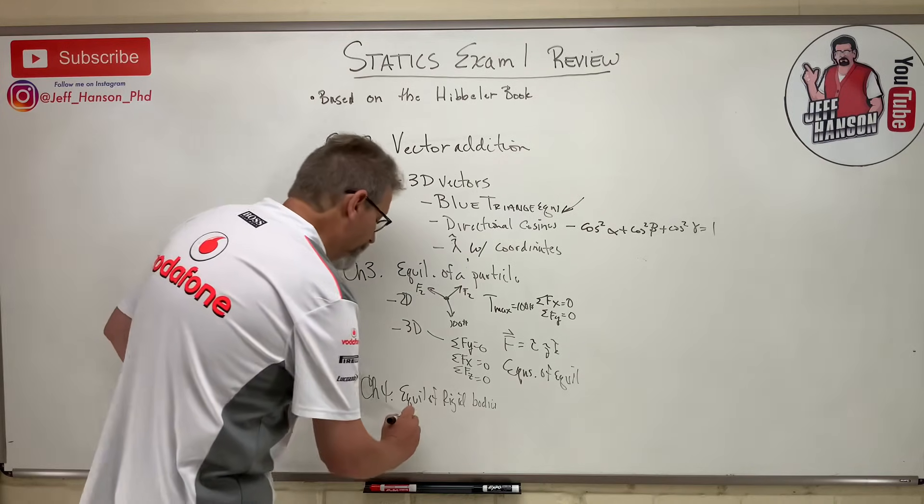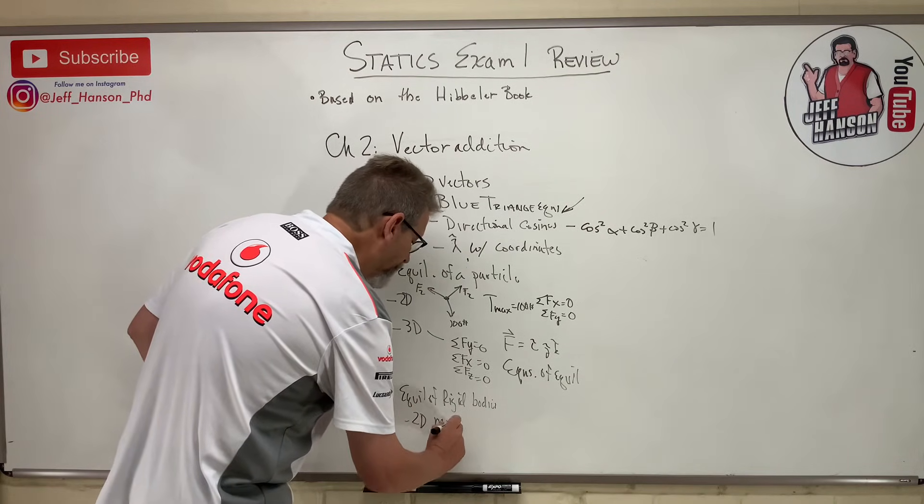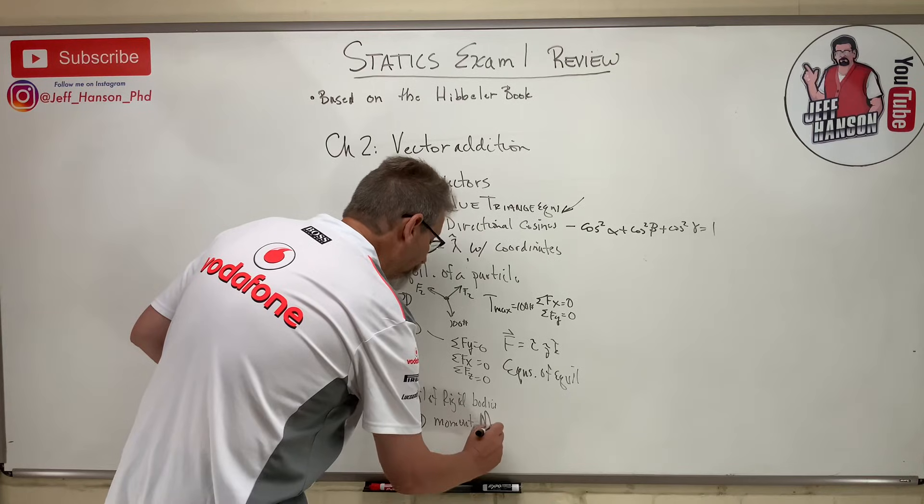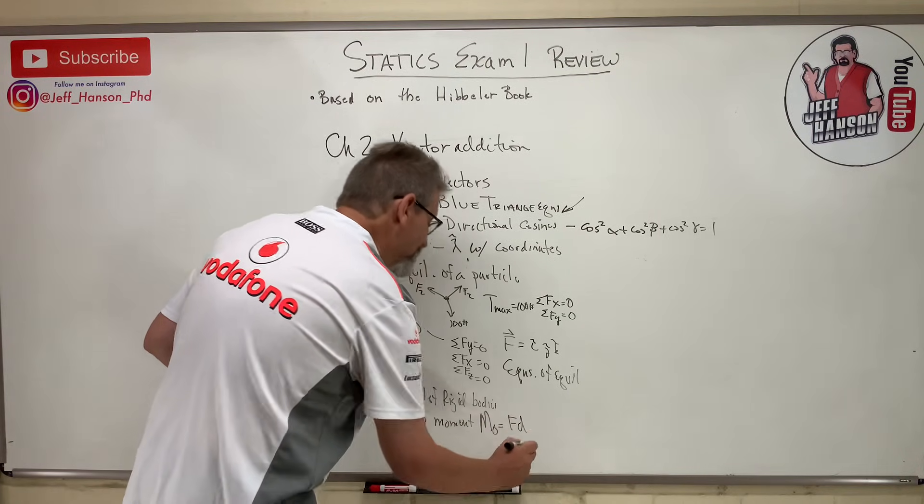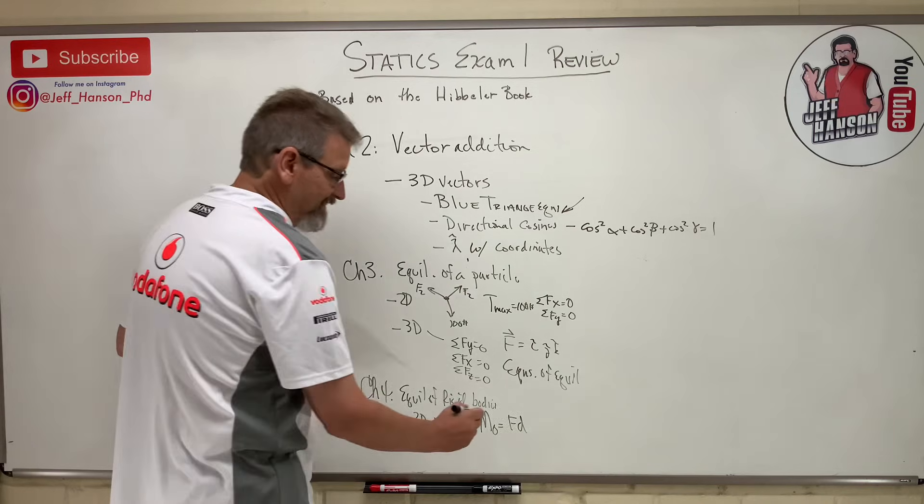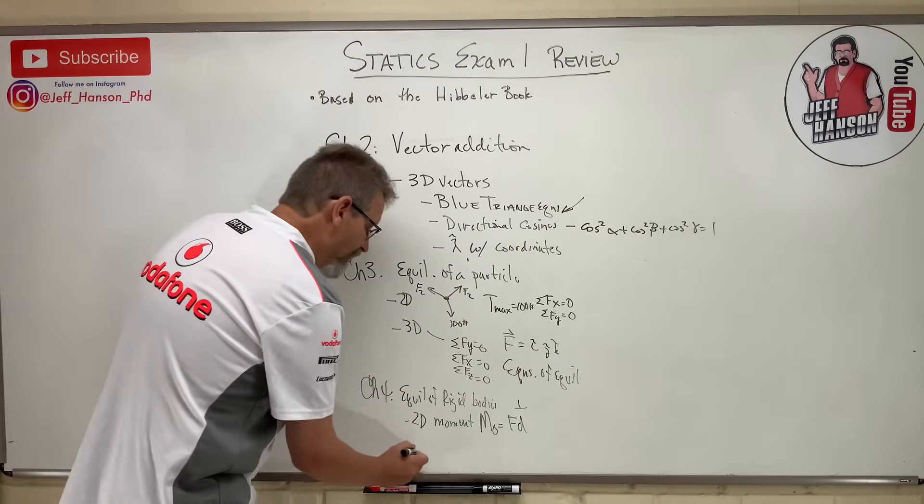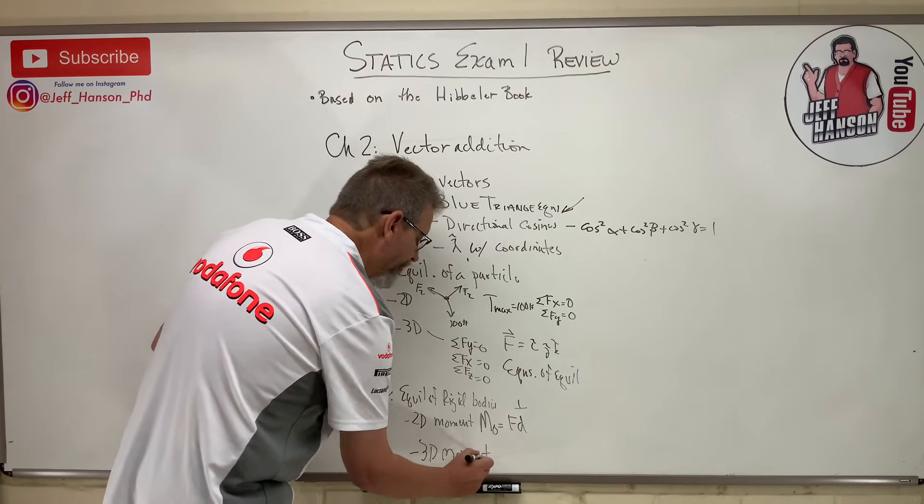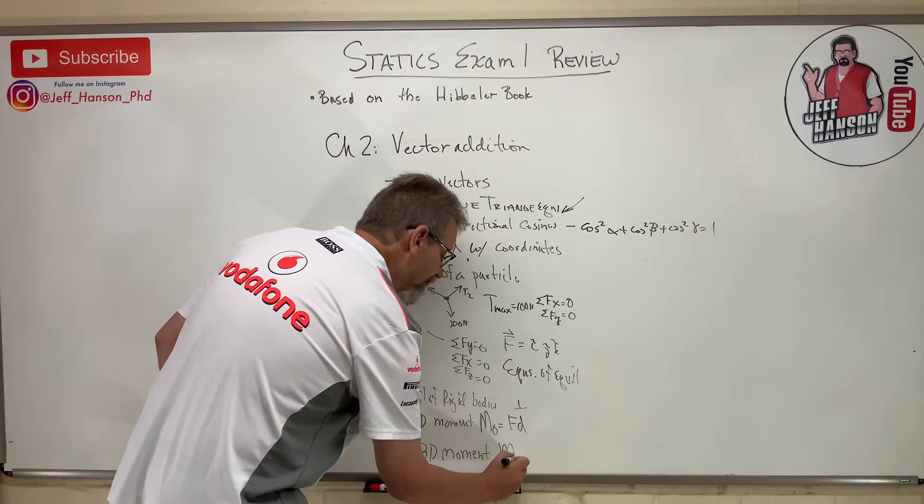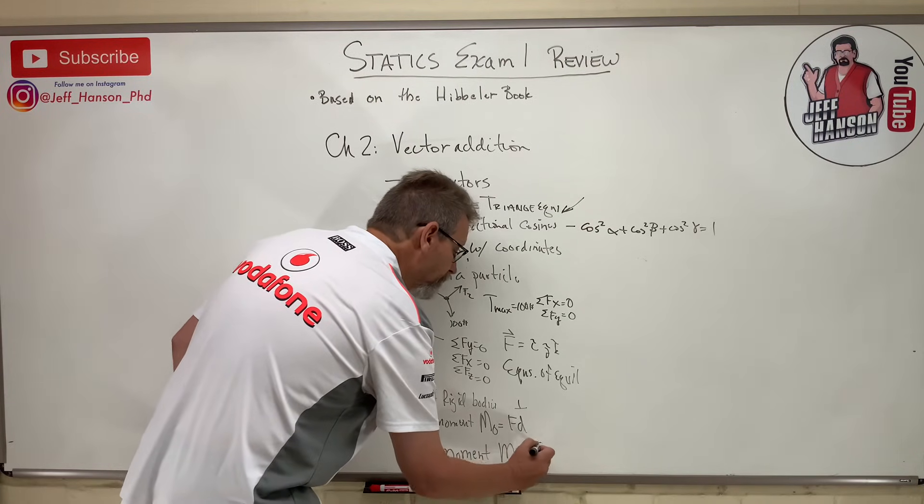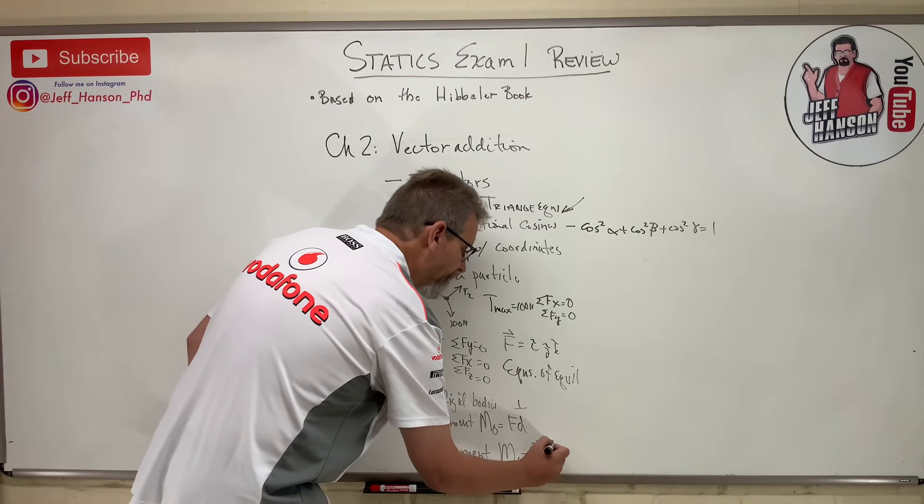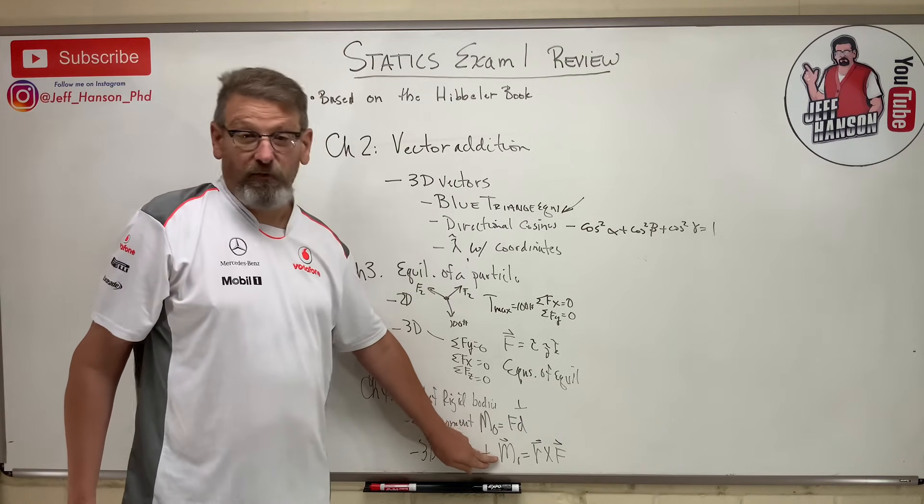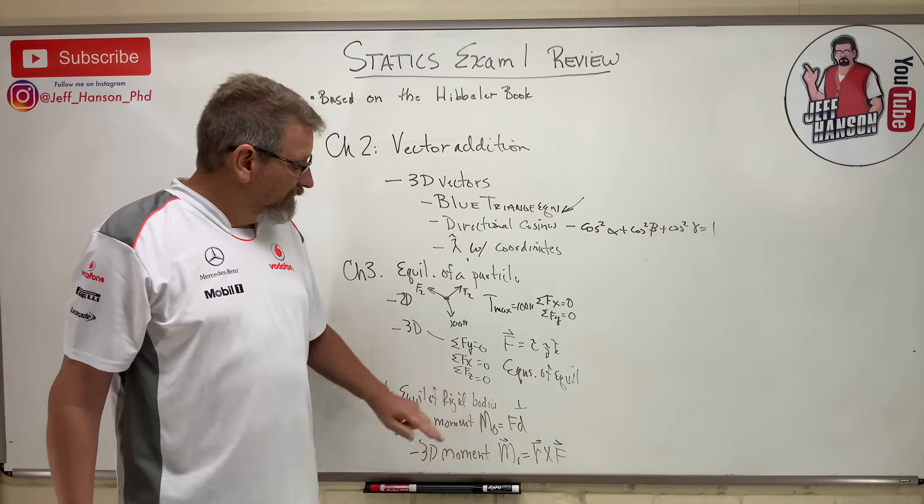In chapter four, that's where we introduce moments. Again, just like chapter three, I could break it down into 2D and 3D. You get a 2D moment problem which I recommend you use: moment about some point equals force times distance. Remember the distance has to be the perpendicular distance. In 3D, you'll have a 3D moment problem. In 3D, I'd like you to put it into r cross f, do the matrix on that. But in 2D, f times d.